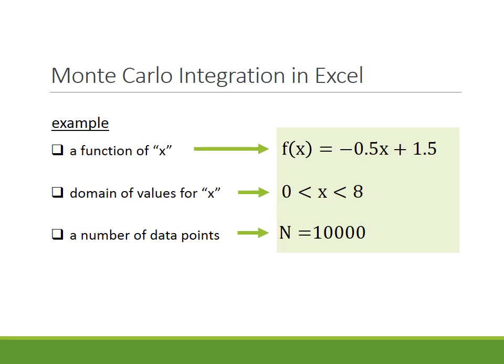For our example, we'll use the linear function: minus 0.5X plus 1.5. Our domain will be X from 0 to 8, and we'll use 10,000 random points.